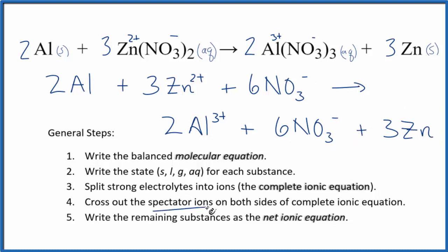Now we can cross out the spectator ions. These are ions that appear on both sides. They don't change, so we're not too worried about them. We just get rid of them. The only thing I can cross out: I have six nitrate ions here in the reactants and six in the products.